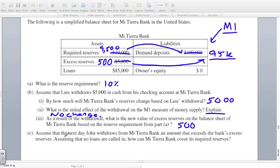Letter C. Assume that the next day, John withdraws from Mt. Tierra Bank an amount that exceeds the bank's excess reserves. Assuming that no loans are called in, how can Mt. Tierra Bank cover its required reserves? What can the bank do? The bank has a lack of liquidity. They can either borrow from the lender of last resort, which is the Fed. They can either borrow from the Fed or they can borrow from a member bank, right? Another bank.